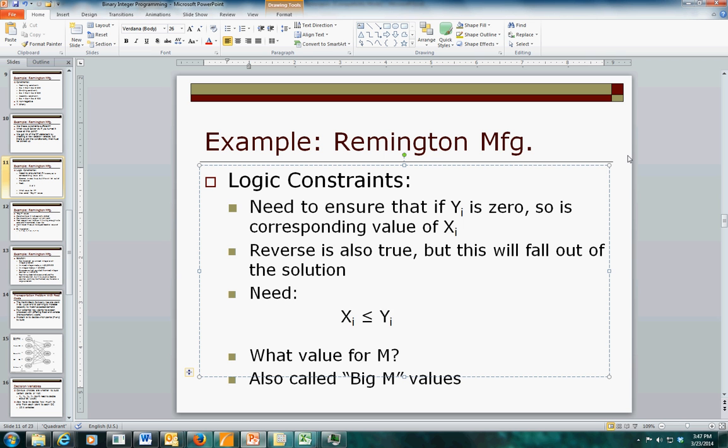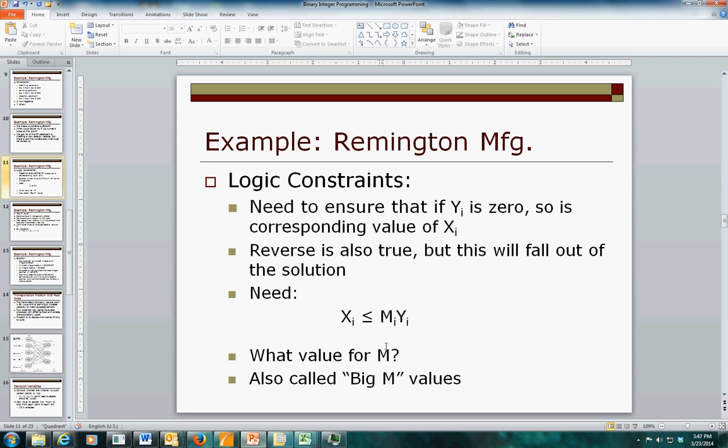And the scaling factor is what we call the big M value. As long as M now is big enough that it's larger than any value of x that you're likely to encounter, then this works correctly. If y is 0, x will be 0. If y is 1, then x can't exceed M. If you have a specific capacity constraint on x, you can apply it here. You can put it right in that number and kill two birds with one stone. But in this case, we don't have explicit constraints on quantities of x's. They're determined indirectly through other resource constraints. So that'll be handled elsewhere. We can just go ahead and put in any number here as long as it's big enough.